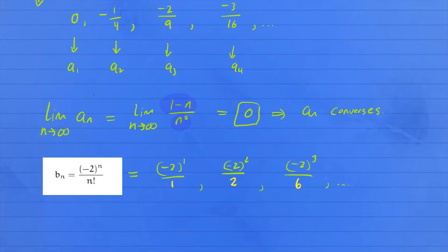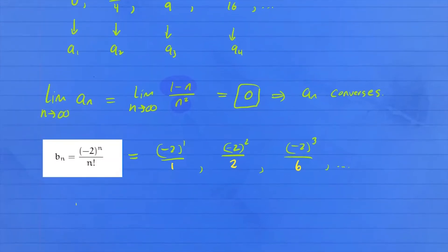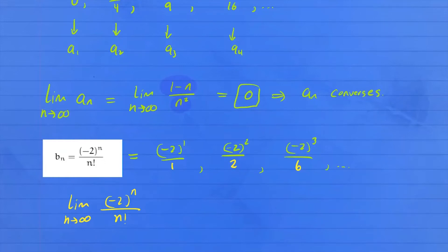Taking the limit as n gets larger of negative two to the n over n factorial, you can see that the denominator grows much faster than the numerator. Therefore, this limit goes to zero, which means that the sequence b_n converges.